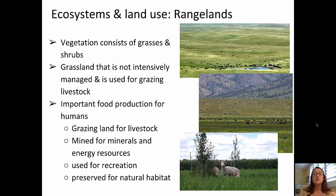Let's turn our attention now to rangelands. These lands have vegetation that consists primarily of grasses and small shrubs. Grassland is not intensively managed globally — it's used primarily for grazing of livestock, and it's important in terms of food production for humans. We're also using these lands to mine them for minerals and energy resources, for recreation, and to preserve natural habitats. It's possible to have lands being used at the surface for livestock grazing while mining them underground or extracting natural gas.